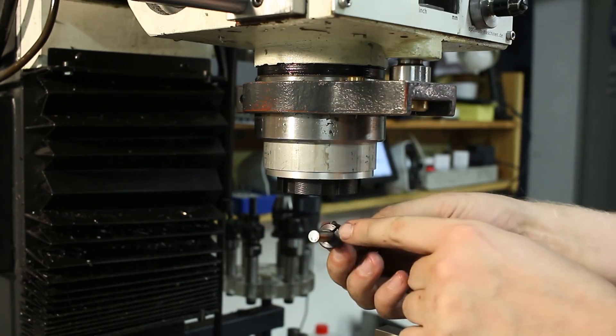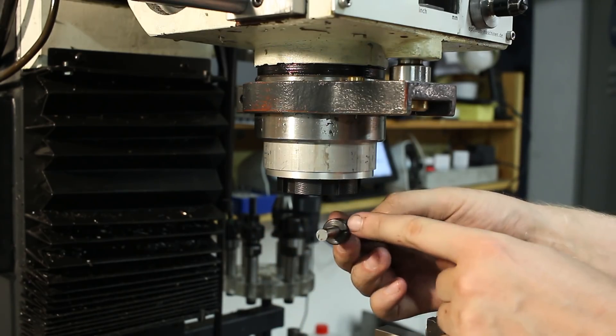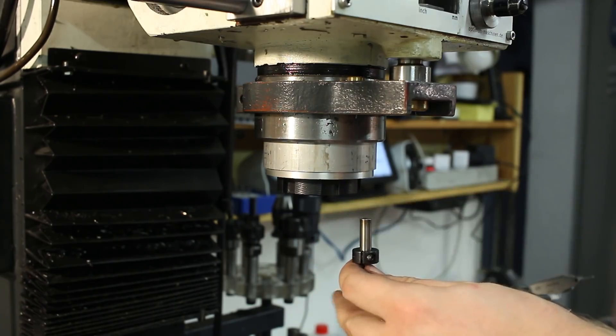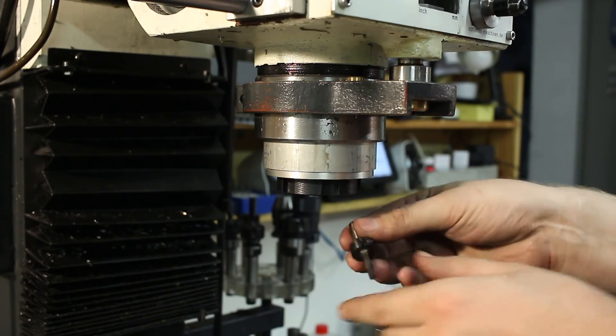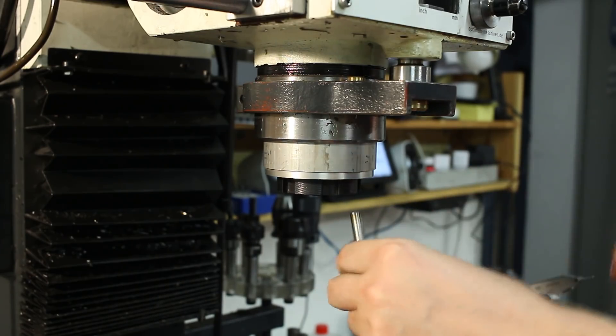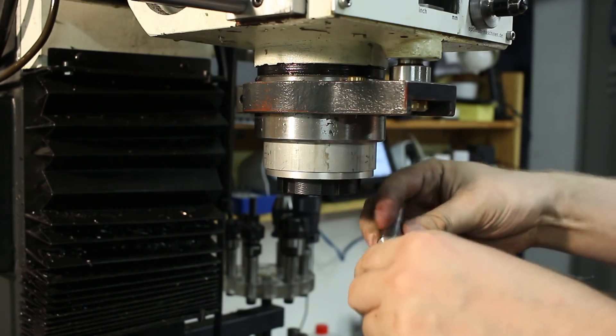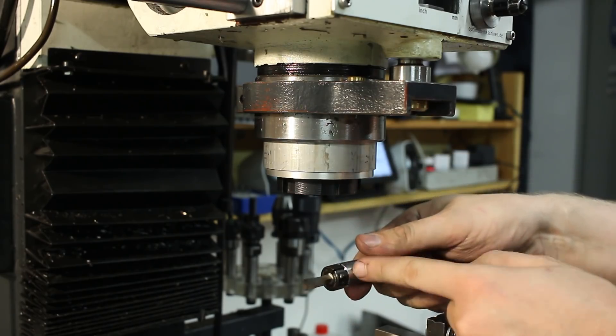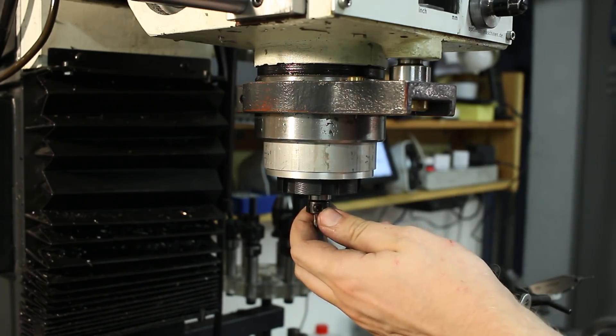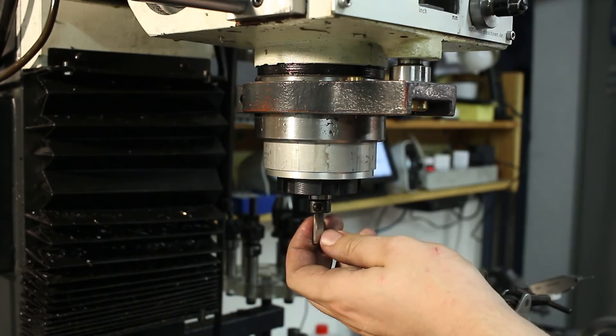I put a standard eight millimeter shaft collar on this tool and clamped it. This is quite heavy cut, five millimeter wide, and I do not want the tool to get pushed up into the collet. So this shaft collar rests against the face of the collet and should help. Let's clamp it.